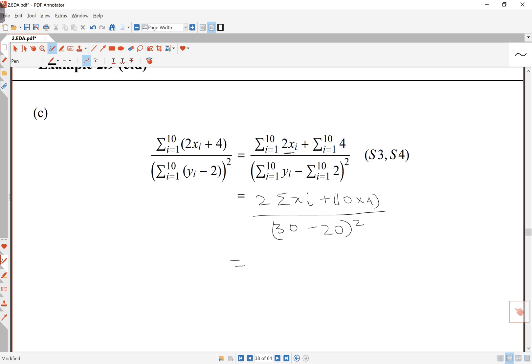If I put all the numbers together here, the sum of xi's was 45, so this is 2 times 45, plus 40, and this is 10 squared is 100, that's 90, and plus 40 is 130 over 100, and that's 13 over 10.